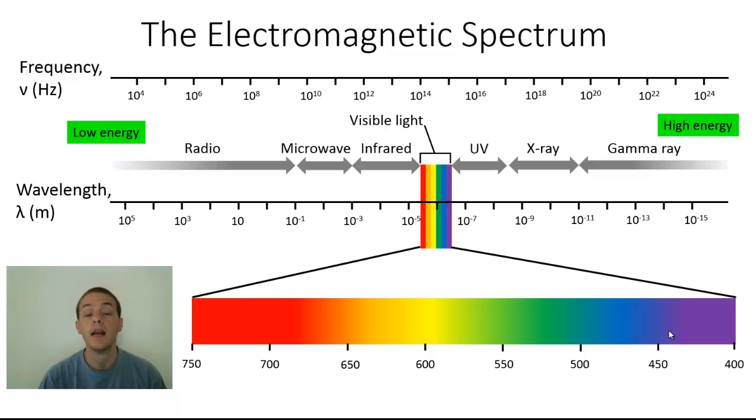If we work left to right here, starting with the lowest frequency, highest wavelength radiation, and work our way to the highest frequency, lowest wavelength radiation, we're going to begin at radio waves.